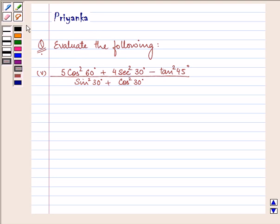It says evaluate the following. Here the fifth part is 5 cos square 60 degrees plus 4 secant square 30 degrees minus tan square 45 degree upon sin square 30 degree plus cos square 30 degree.